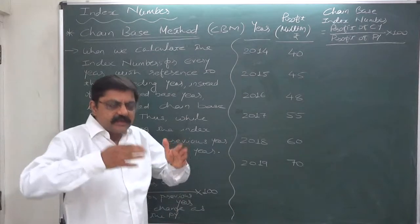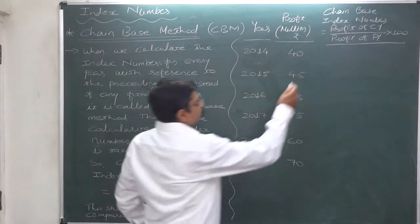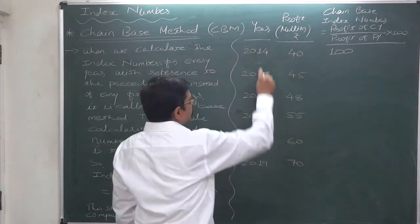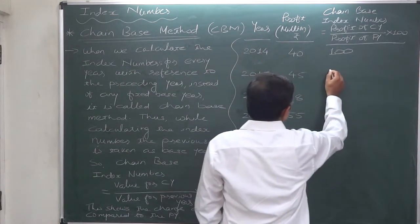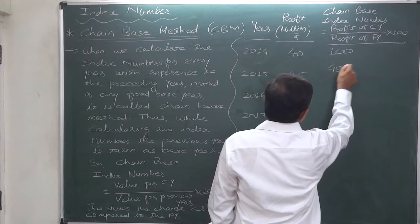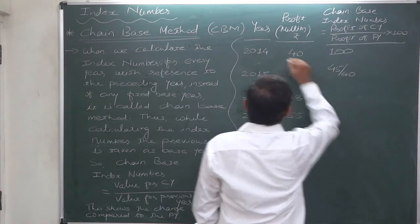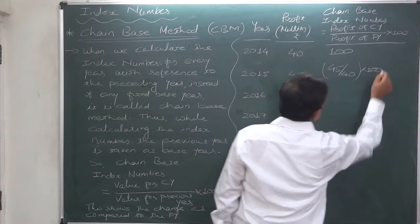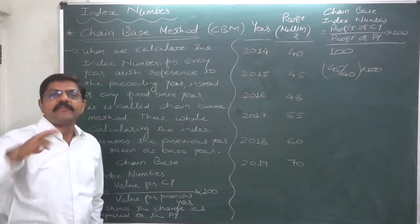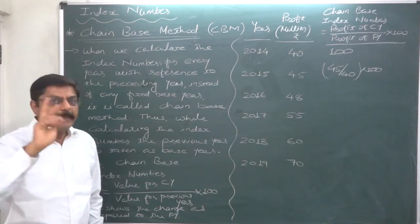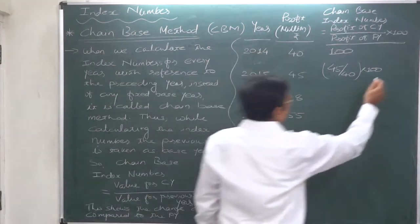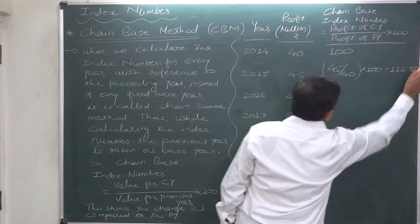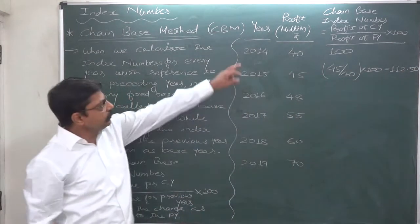But for 2015, 2014 will be Base year. So index number will be 45 divided by value of previous year, 40, into 100. For second year, the first year becomes the base year. So it is 112.5. The interpretation is: as compared to 2014, in 2015 the profit increased by 12.5%.